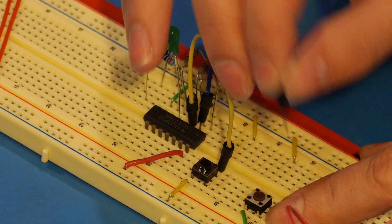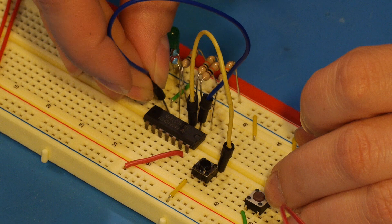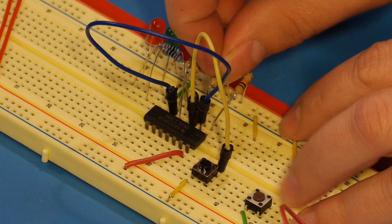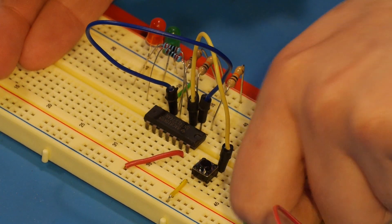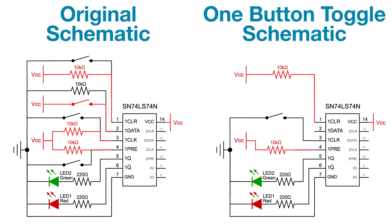Next, rather than manually triggering the data input with a button, we'll connect it to pin 6, NOT-Q. Since NOT-Q will always be either high or low, we don't need a grounding resistor, so we can remove that too. The remaining clock button will be our toggle trigger. That's it. Easy peasy. Let's see it in action.